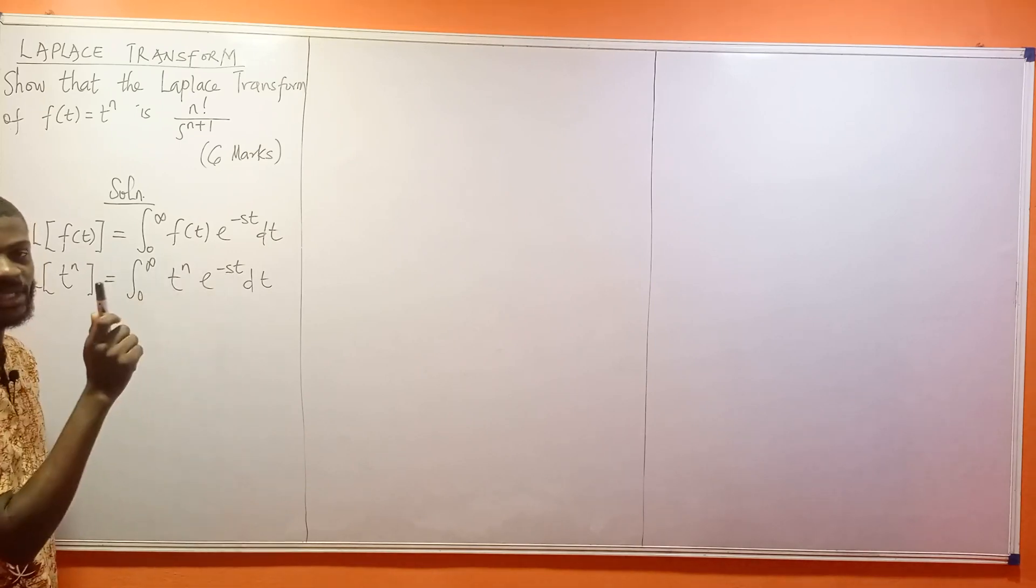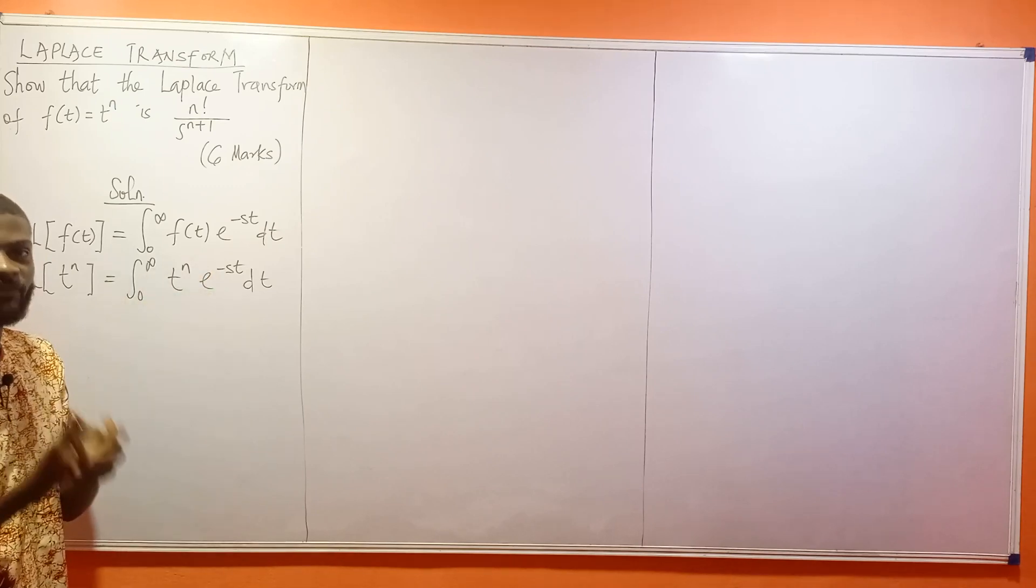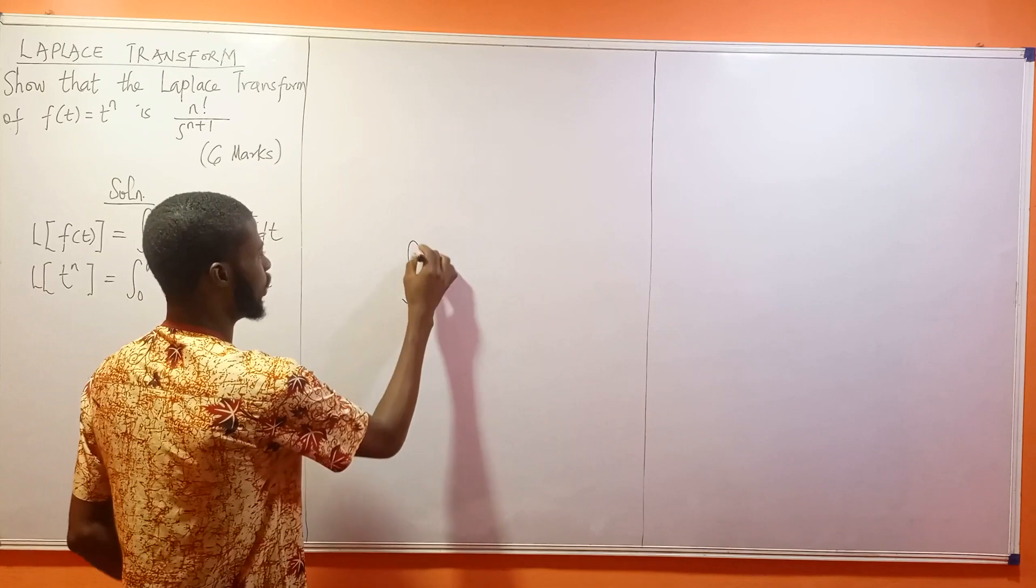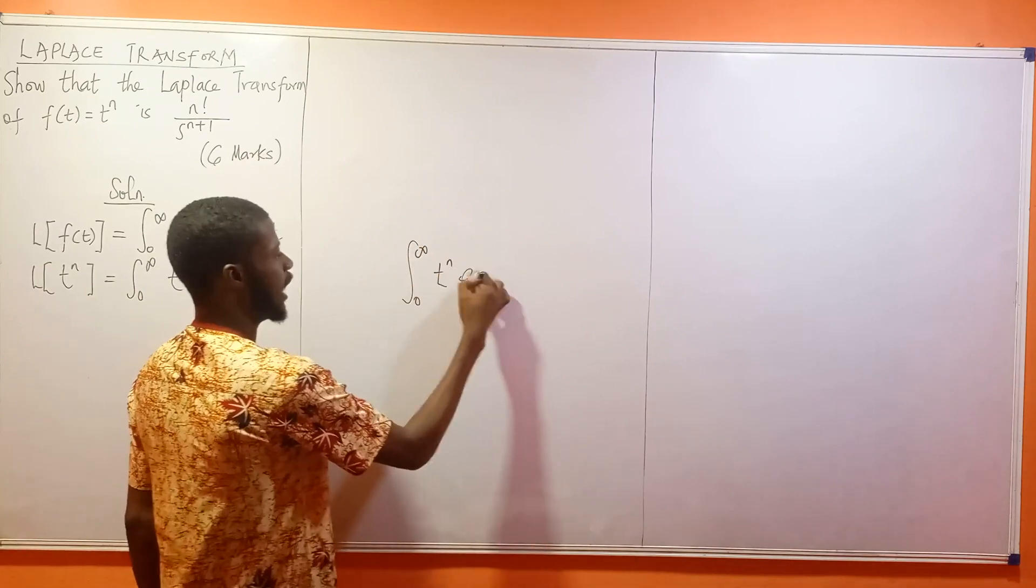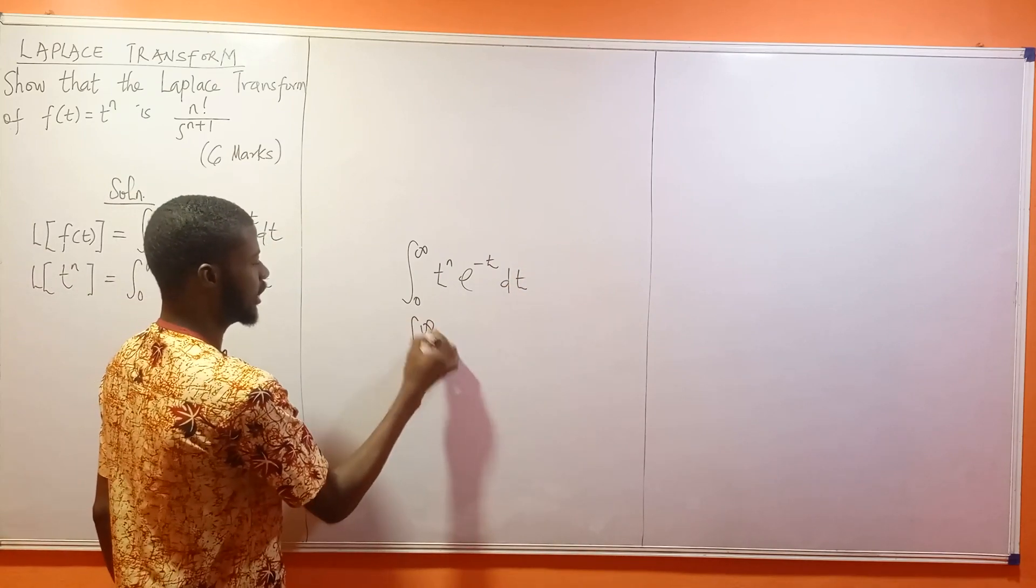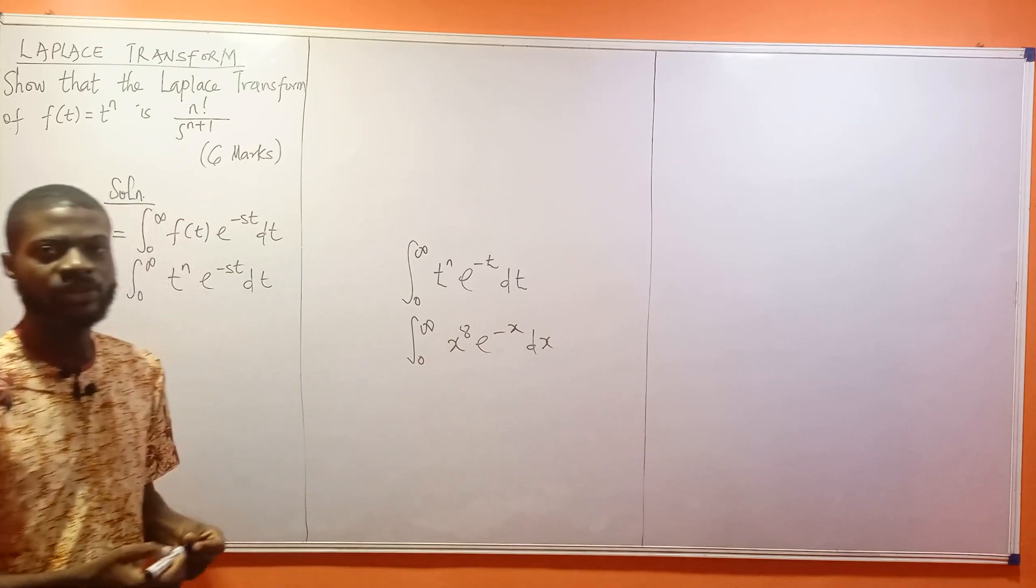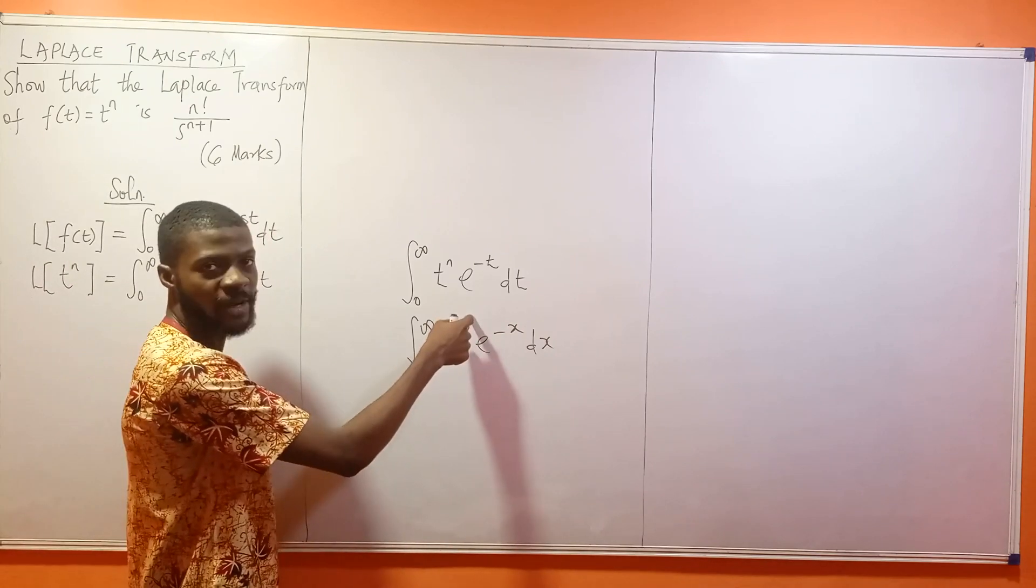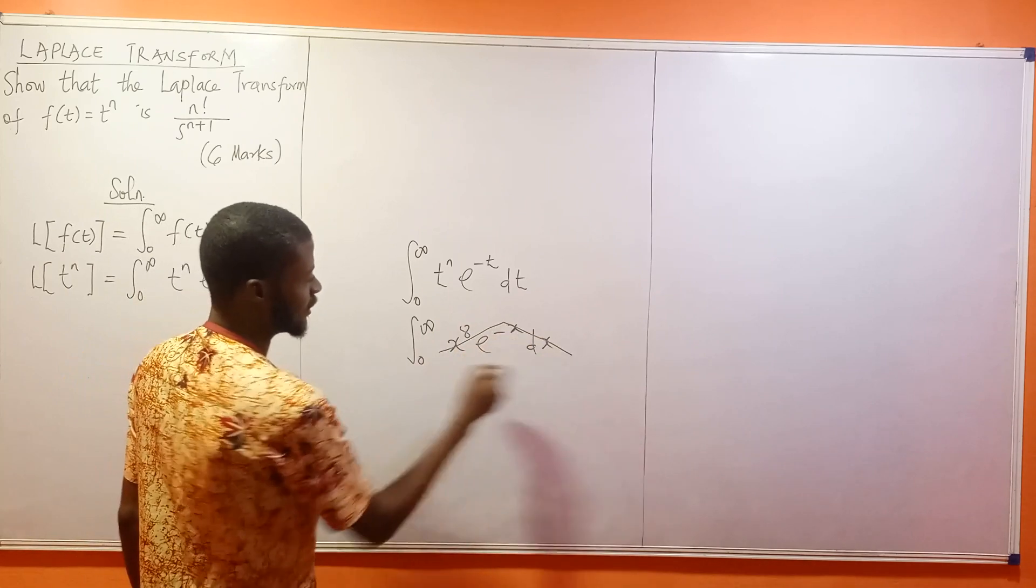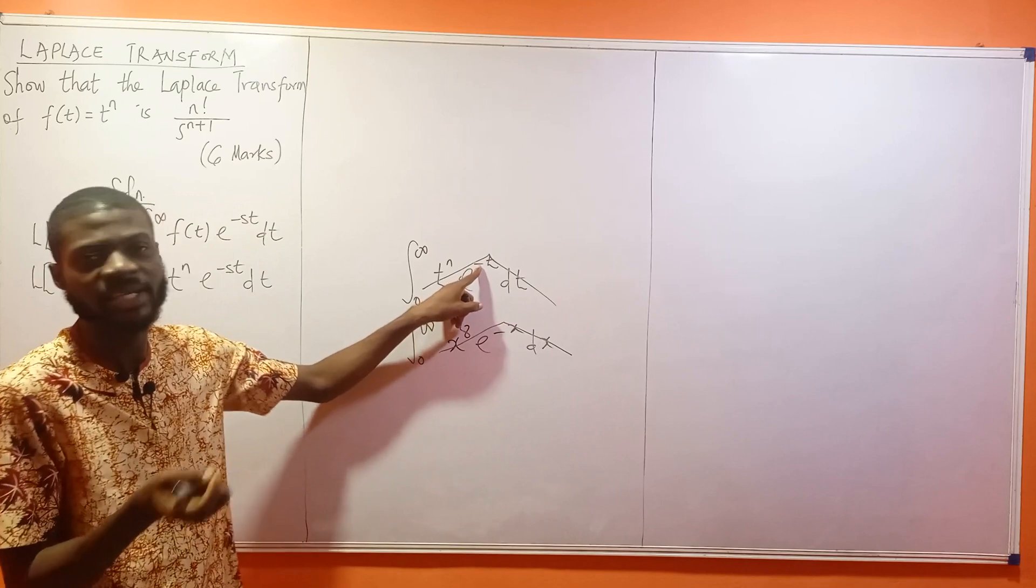The gamma function requires the exponential to be raised to a single negative variable. Here I have st, which is not single. The gamma function is integral from 0 to infinity of t^n e^(-t) dt. The exponential must be a negative single variable.